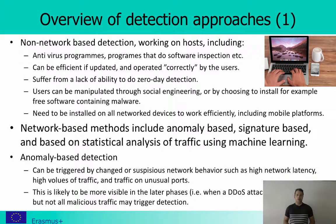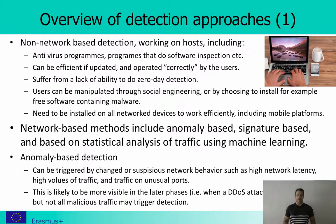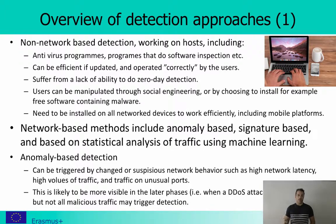Then there are the network-based methods, which include anomaly-based, signature-based, and methods based on statistical traffic analysis. Anomaly detection works by identifying very unusual behavior — that could be triggered by high network latency, a big increase in the amount of traffic, or traffic on unusual ports. When you see something considerably different from normal network traffic, it looks really suspicious.